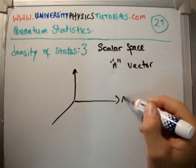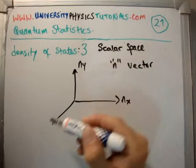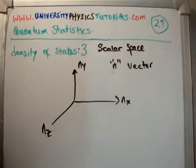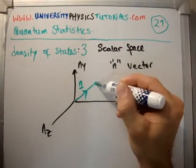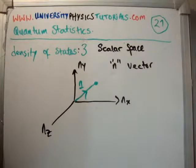So we have n sub x, n sub y, and n sub z. So that is our quantum number in the x, y, and z direction. So in order to get, it is a vector. So here's the n vector. And say this point here is whatever value of the n vector it is.